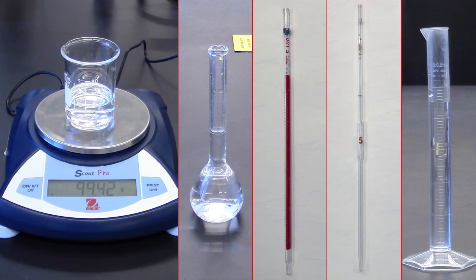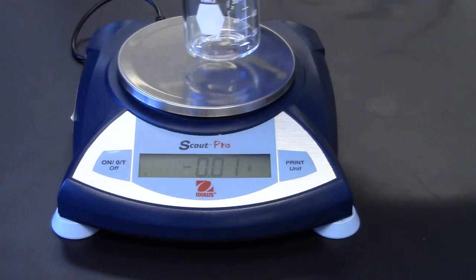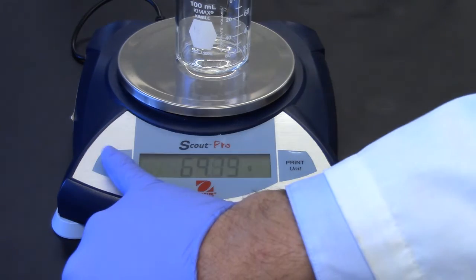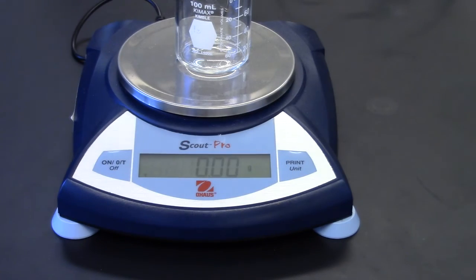There are other measuring devices that may be available. An electron balance has the tare function that lets you tell the balance that your empty, dry beaker is zero. The weight of the beaker is automatically deducted from all your measurements.